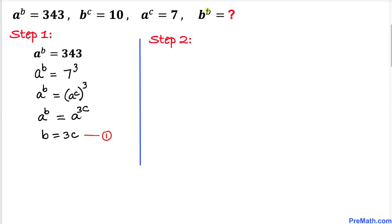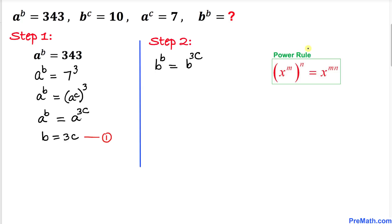Now we want to find the value of b power b. We know from equation 1 that b equals 3c, so I am going to replace this b in the exponent by 3c. This gives us b power 3c. Using the power rule again, the right-hand side can be written as b power c, then power 3.